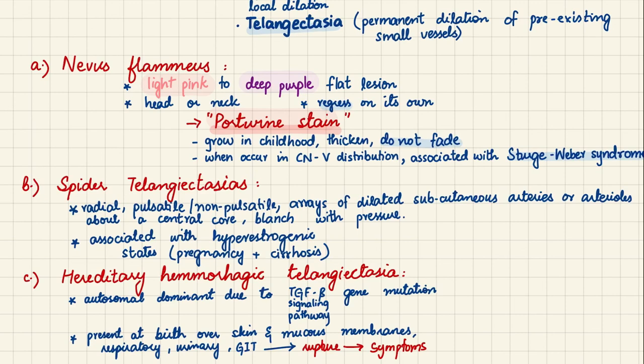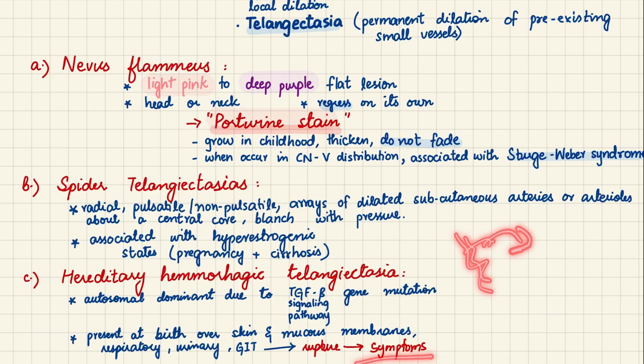These telangiectasias are present on mucous membranes as well as skin. Because they are permanent dilations of pre-existing small vessels, these vessels can rupture and symptoms will vary according to site: rupture in the respiratory mucous membrane causes hemoptysis, in the urinary tract causes hematuria, and in the GI tract causes blood in stools and hematemesis.